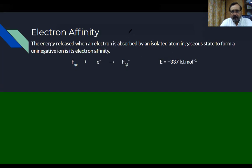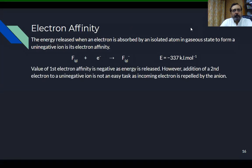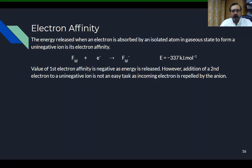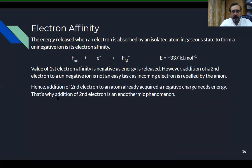The first electron affinity is always negative — the negative sign means energy is released, so it is an exothermic process. However, the addition of a second electron is an endothermic phenomenon.